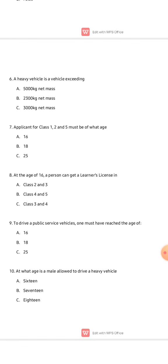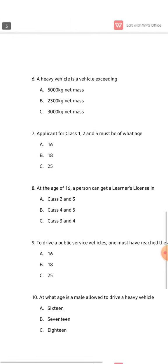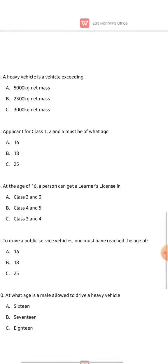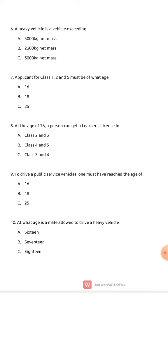Question seven: applicants for class one, class two, and class five must be of what age — 16, 18, or 25? The correct answer here is 18. They must be 18 years old.